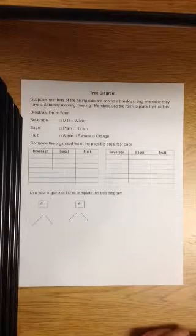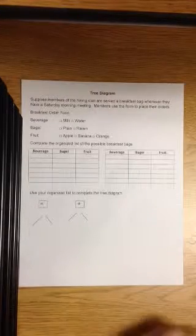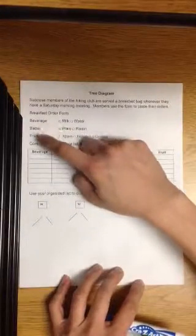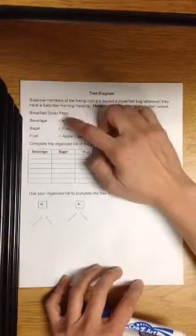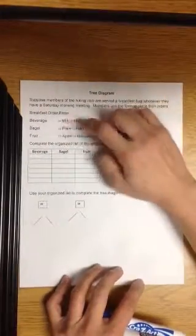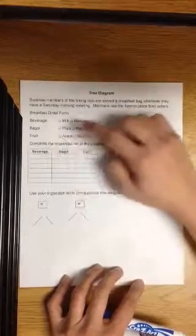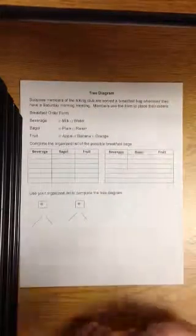So for this question, suppose members of the hiking club are served a breakfast bag whenever they have a Saturday morning meeting. They can have a beverage, bagel, or fruit. Out of the beverages, there's milk and water. Bagels: plain or raisin. Out of fruits: apple, banana, and orange. So can you complete the organized list of the possible bags?